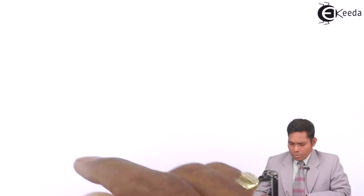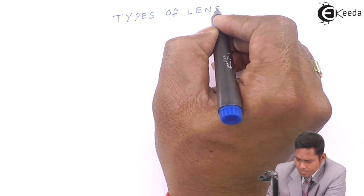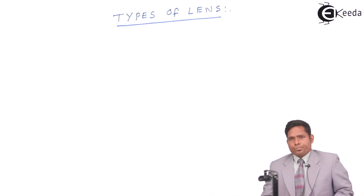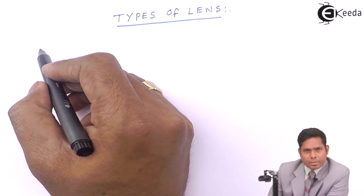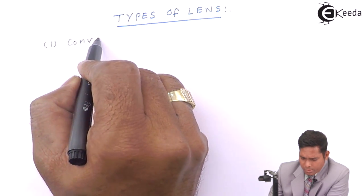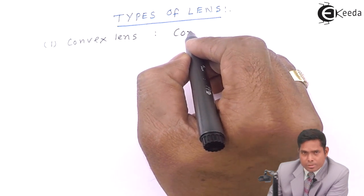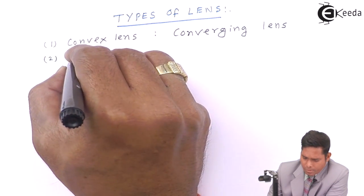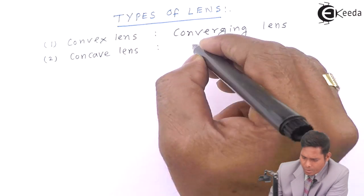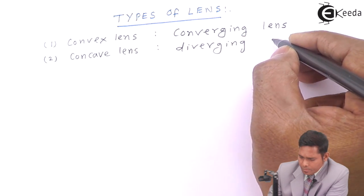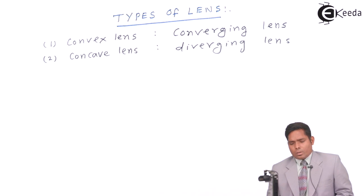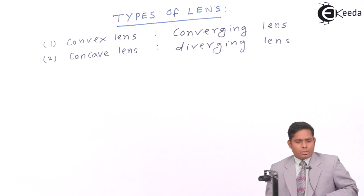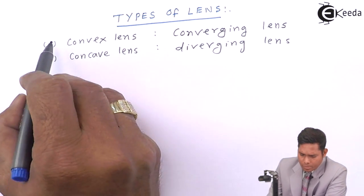Now let us discuss the types of lenses. We are concerned with the convex and concave types of lenses. Lenses are basically divided into convex and concave types. One is the convex lens, sometimes called the converging lens. Under convex and concave lenses we will have different categories that we will discuss. Let us first take the convex lens.